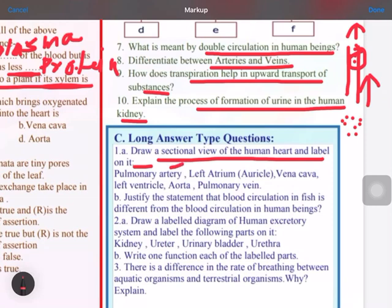Second is justify the statement that blood circulation in fish is different from the blood circulation in human beings. So first point you have to remember in this case is the blood circulation in case of human beings is different because the heart is four-chambered in case of human beings and it is two-chambered in case of fishes. First point. Second, in case of fishes, the oxygenated blood directly goes into the body organs without going inside the heart.